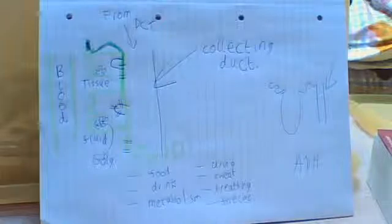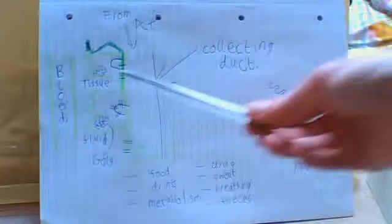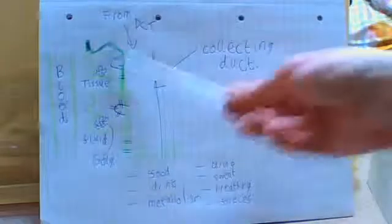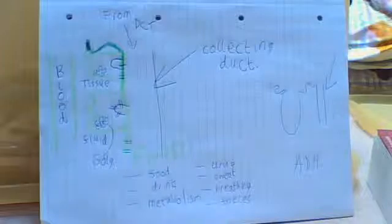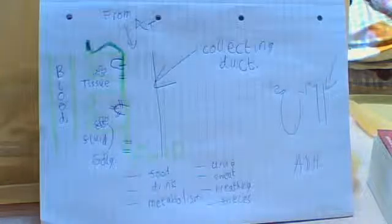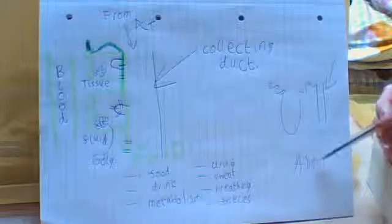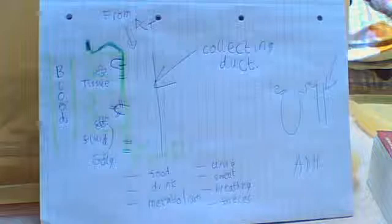Now, you're probably wondering, well, what determines whether these aquaporins actually are manufactured by these cells? How do these cells know when to produce these aquaporins? And the answer to that is because ADH, which is an antidiuretic hormone, which is produced in our neurosecretory cells in our brain.